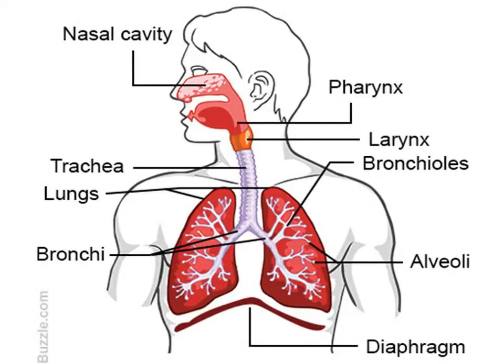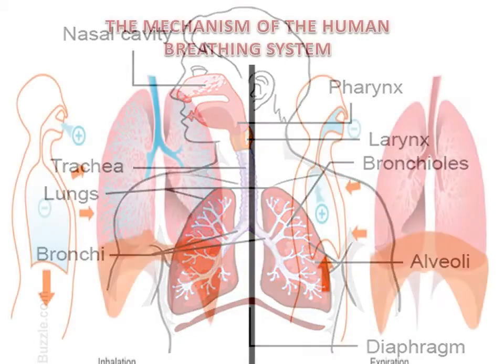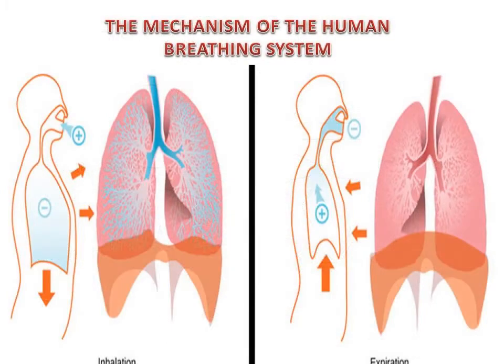In my previous video on the human breathing system, you learned about the essential parts of the breathing system and their functions. Now you are ready to learn the mechanism of the lungs and the diaphragm. In this video, you will be able to explain how the lungs work and describe how the movement of the diaphragm helps the air go in and out of the lungs.